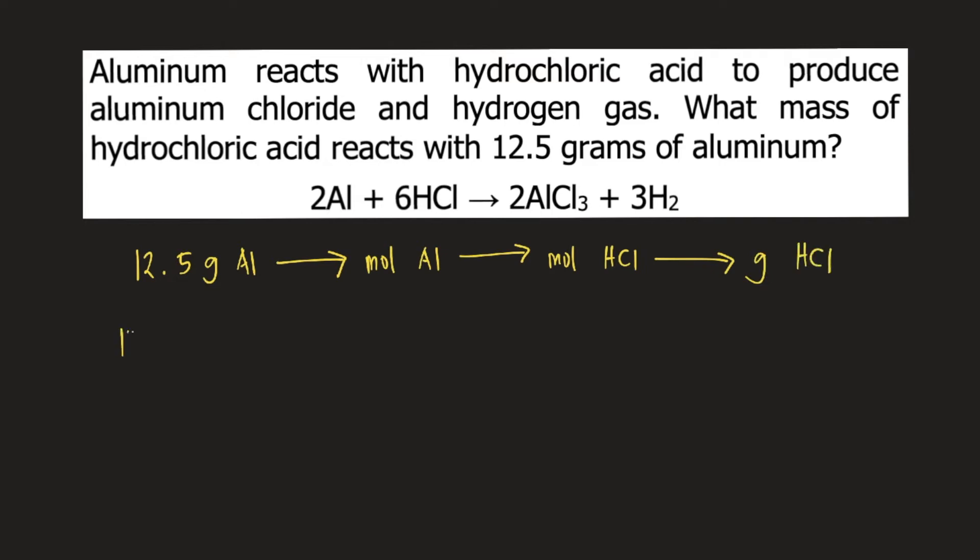We start with 12.5 grams of aluminum. In order to convert that to moles of aluminum, we need the molar mass of aluminum. The molar mass of aluminum is 26.98 grams per mole.